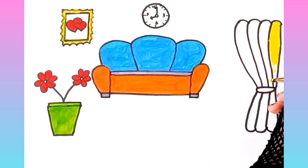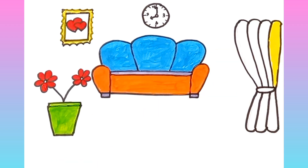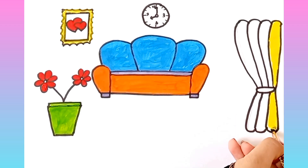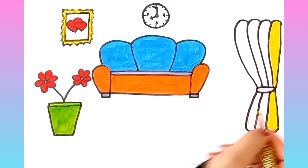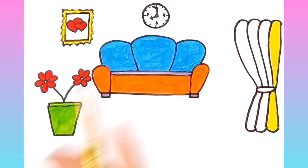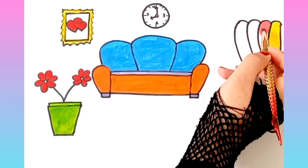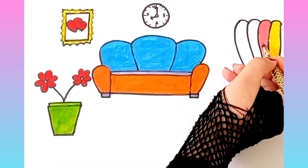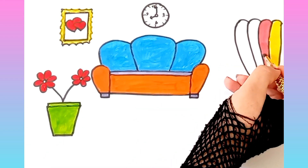P is for pet, p, p, pet. Q is for queen, qu, qu, queen. R is for rabbit, r, r, rabbit.